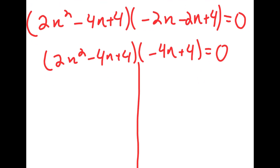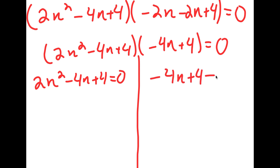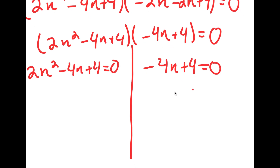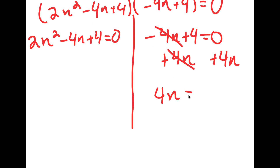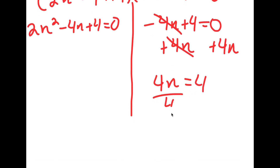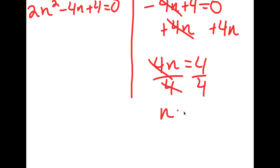So this means I have two equations. I have 2n squared minus 4n plus 4 equals 0, and I have negative 4n plus 4 equals 0. For negative 4n plus 4 equals 0, this is an easy equation to solve. All I have to do is add 4n on both sides to get 4n equals 4, and if I divide both sides by 4, I get n equals 1.